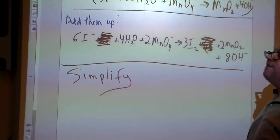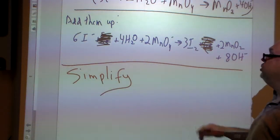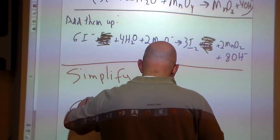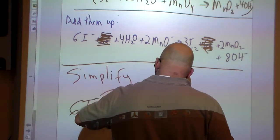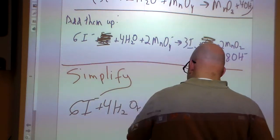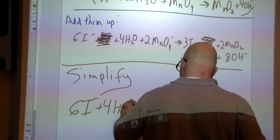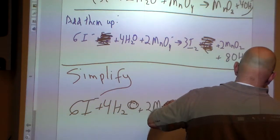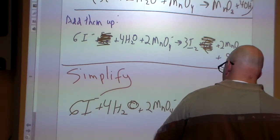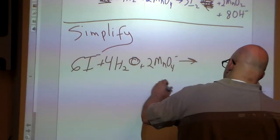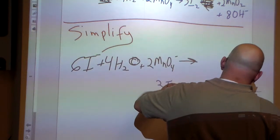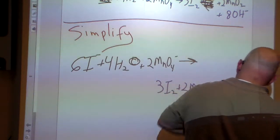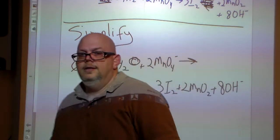What's going to be our final redox equation? The final one, the big kahuna. Here it is: 6I minus plus 4H2O plus 2MnO4 minus gets us 3I2 plus 2MnO2 plus 8OH minus. That's it. Read it and weep. We've gone through quite a bit, haven't we? It's been a long road.